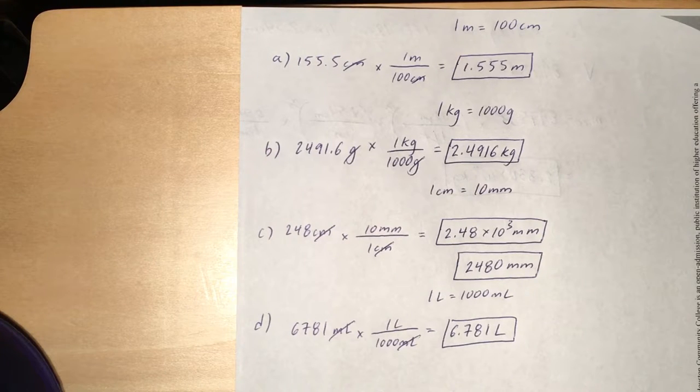Same strategy for B. 1 kilogram equals 1,000 grams. So we're going to take 2491.6 grams, divide that by 1,000 grams, multiplied by 1 kilogram, giving us 2.4916 kilograms.